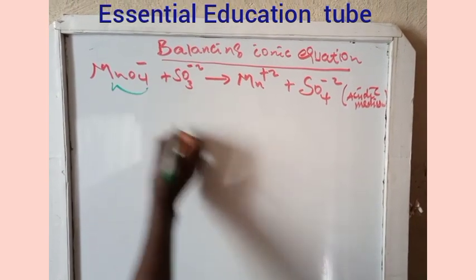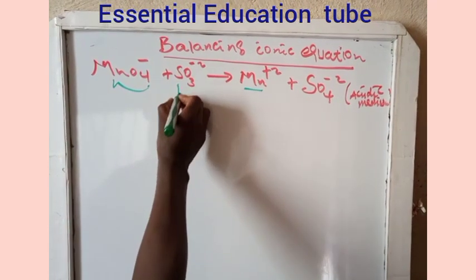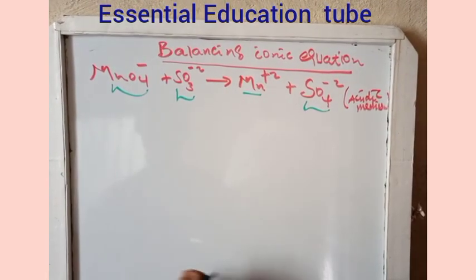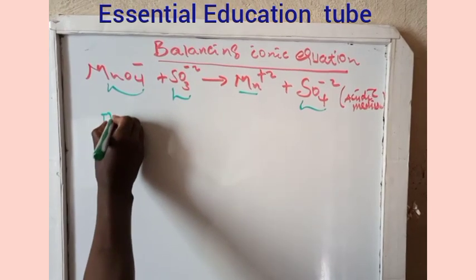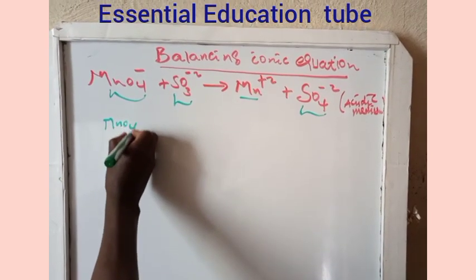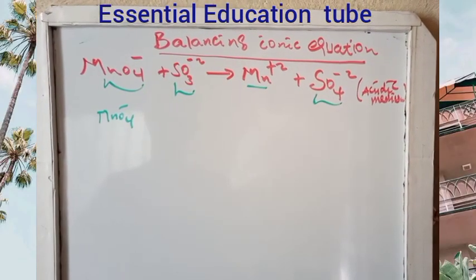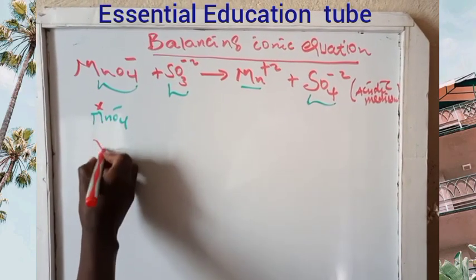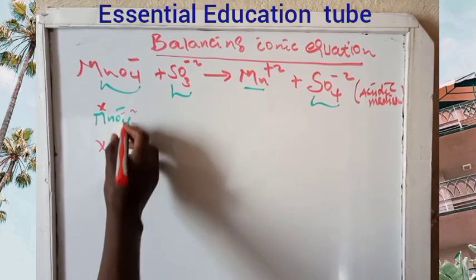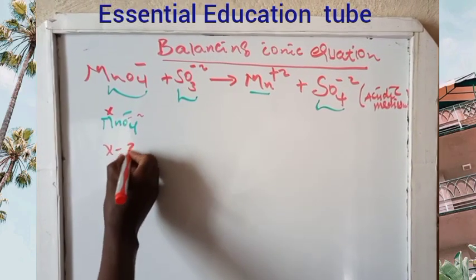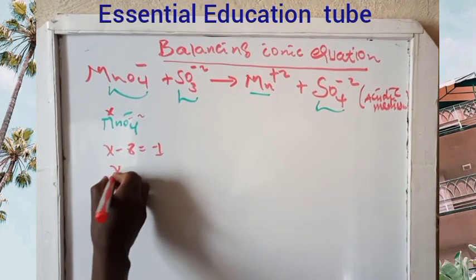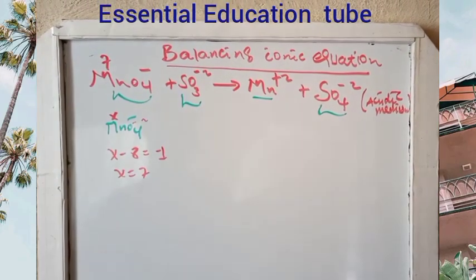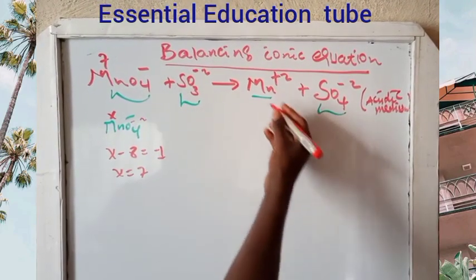The oxidation number of manganese: X per oxygen is at minus 2, so X plus 4 times (minus 2) equals minus 1, giving X plus (minus 8) equals minus 1, so X equals 7. The oxidation number of manganese in permanganate is +7.